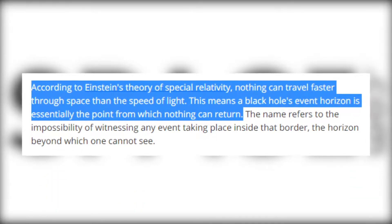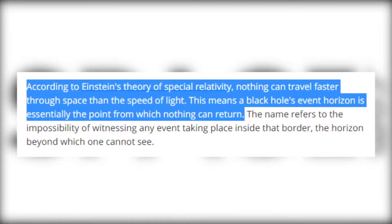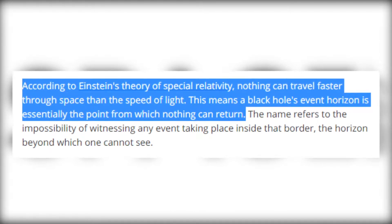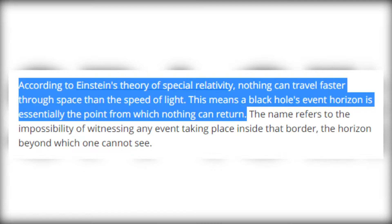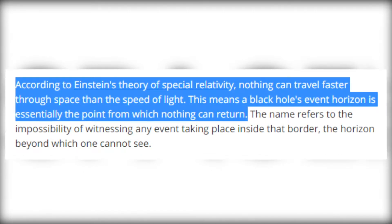As Space.com puts it, according to Einstein's theory of special relativity, nothing can travel faster through space than the speed of light. This means a black hole's event horizon is essentially the point from which nothing can return.